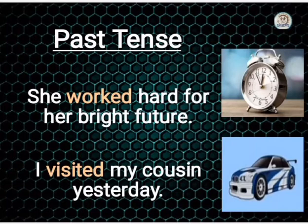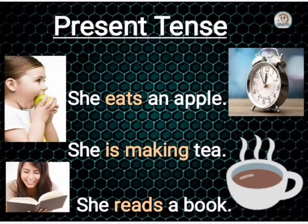جیسا کہ آپ کہیں: 'میں پچھلے ہفتے بازار گیا تھا، میں دو دن سے school نہیں آ رہا تھا۔' یہ سب ماضی میں، گزرے ہوئے وقت میں شامل ہوتے ہیں۔ مثال کے طور پر: 'She worked hard for her bright future' اور 'I visited my cousin yesterday۔' یہاں 'visited' verb ہے اور 'yesterday' سے پتہ چل رہا ہے کہ یہ past tense ہے۔